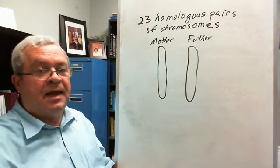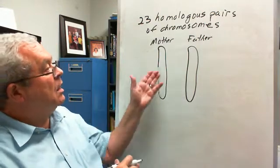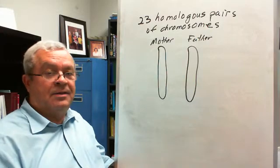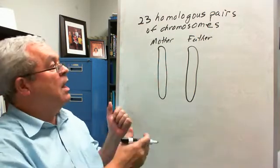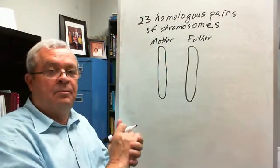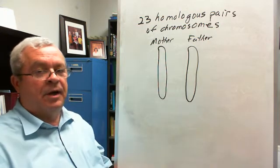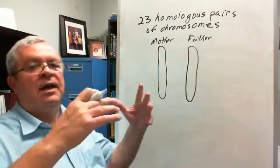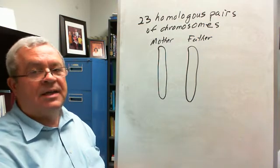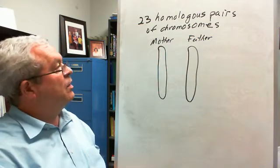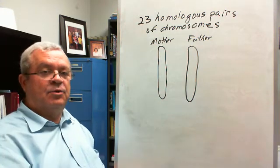How do we match up a homologous pair? Both chromosomes of the homologous pair are the same length, same central centromere position, and same banding pattern when stained. But there is a fourth similarity that you can't see, that really underlies all the rest — and that is that these two chromosomes have exactly the same genes.